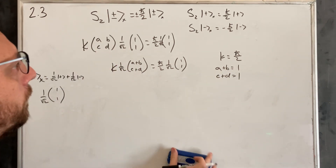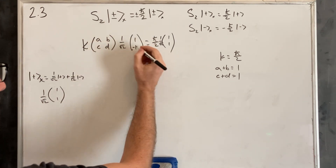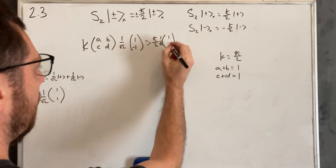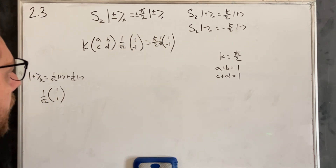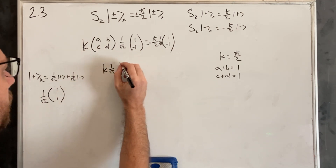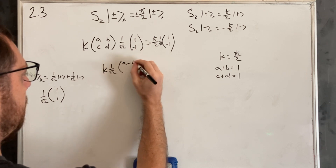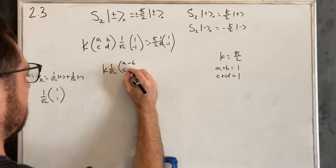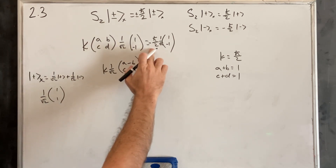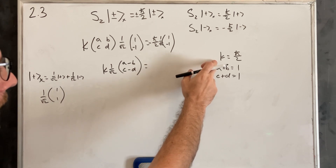Now let's try spin-down. The |−x⟩ state in matrix form is (1/√2)·[1, −1]. This is going to equal −ℏ/2 times |−x⟩, which is (−ℏ/2)·(1/√2)·[1, −1]. Pulling out K and 1/√2, we get [A−B, C−D]. We already said K equals positive ℏ/2.